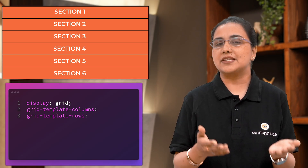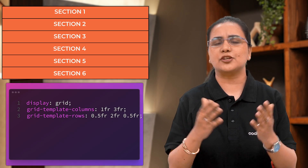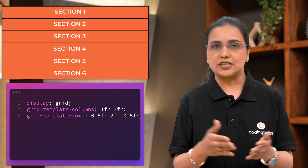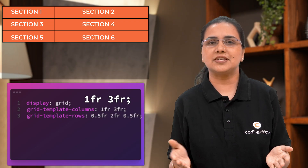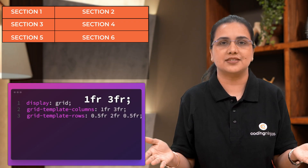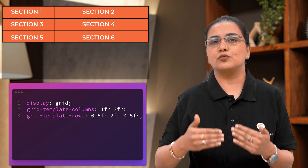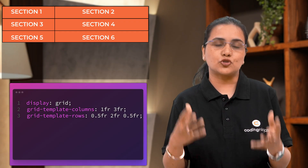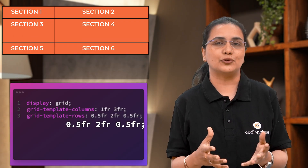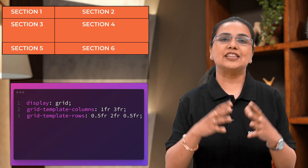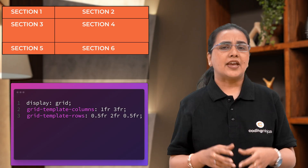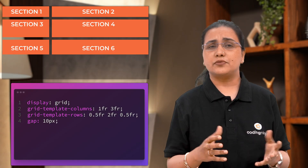You can provide values in pixels or in FR. FR stands for fraction of the screen, so it can be divided into as many fractions as you want. For example, 1fr by 3fr means three parts go to one section and one part goes to the other. However many values you give in columns or rows, that many columns and rows are created. So if you have two values for columns and three for rows, you'll have two columns and three rows on the whole page. You also have gap, justify-content, justify-items, and all the alignment properties we already saw in Flex.